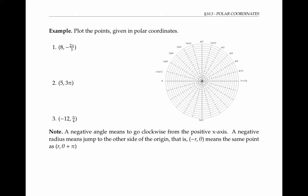Let's plot these points given in polar coordinates. The eight here is the value of the radius, and negative two-thirds pi is the value of the angle theta. The negative angle means that I need to go clockwise from the positive x axis, instead of counterclockwise like I normally would for a positive angle. So negative two-thirds pi means I need to go to this line right here, and the eight for the radius means I need to go eight lines out from the origin. So my point should be around right here.